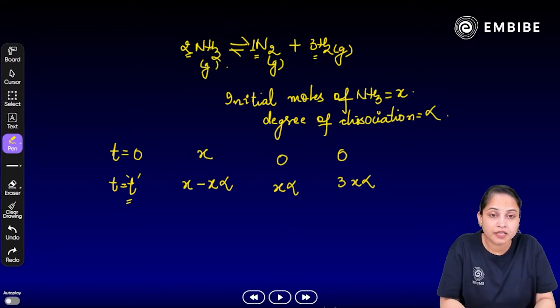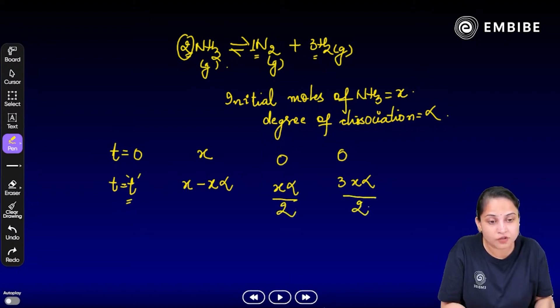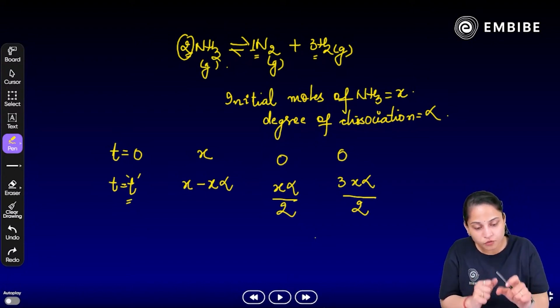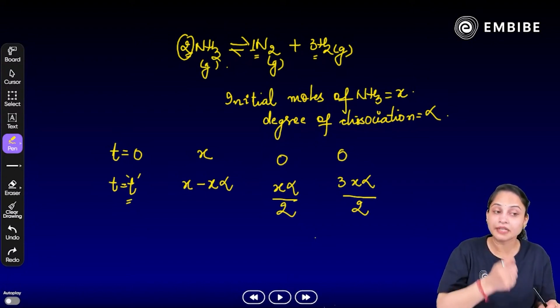And what will you do? You will divide the stoichiometric coefficient of reactant. So, you divide the coefficient of reactant. This number of moles will come at time t or if you ask at equilibrium time.